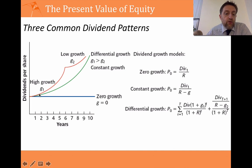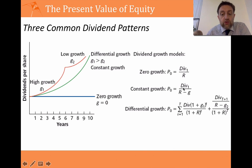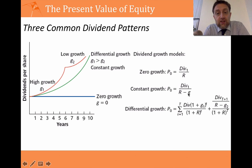In the constant growth model, dividends grow at a certain rate every period — say 5% forever. Here we use the growing perpetuity shortcut formula: price at time zero equals the dividend at time one divided by (R minus G), the discount rate minus the growth rate. This shortcut always requires the first dividend to be one period from now — that's at time one. This is known as the dividend growth model.